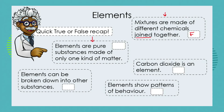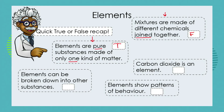True or false: elements are pure substances made of only one kind of matter. How do you feel about that? I hope you were able to say that is true. And that is, for the moment, our definition of what an element is — a pure substance made up of only one kind of matter.